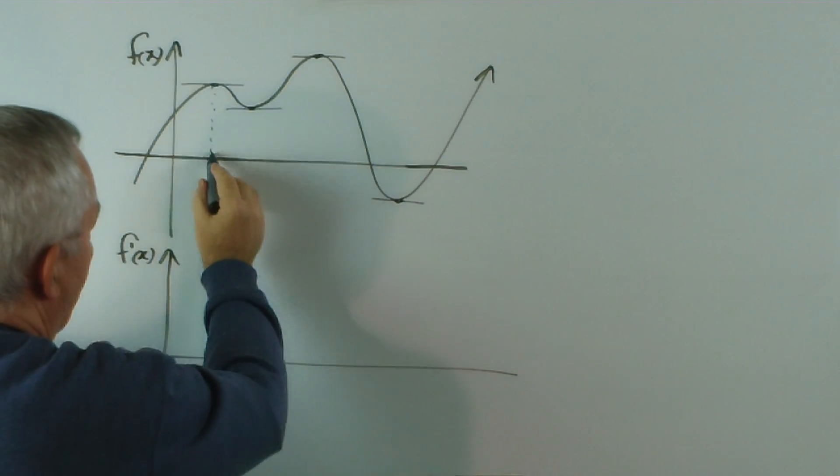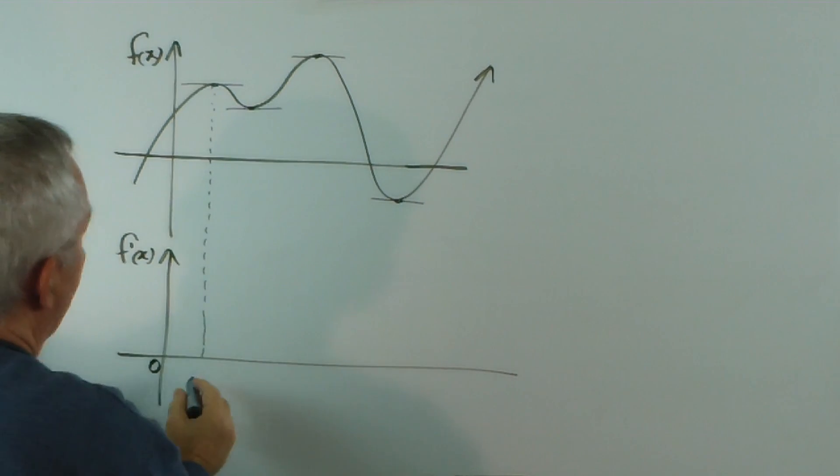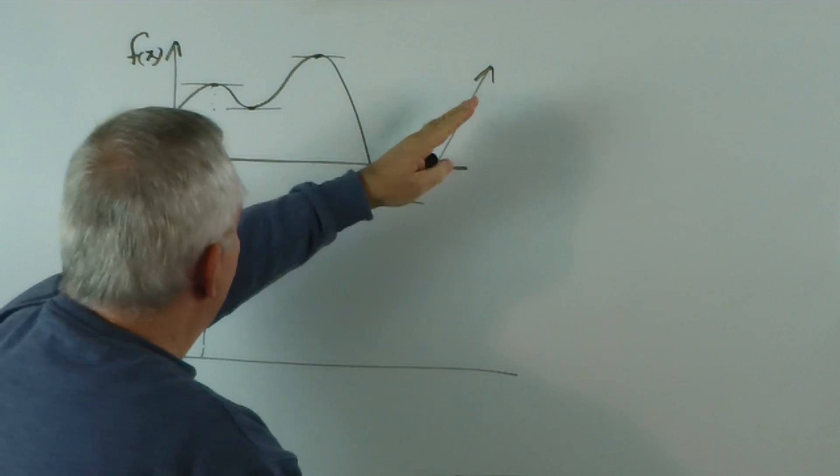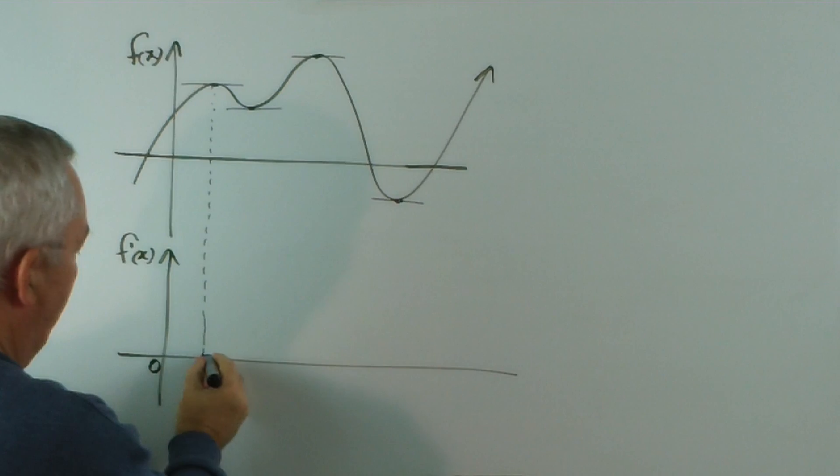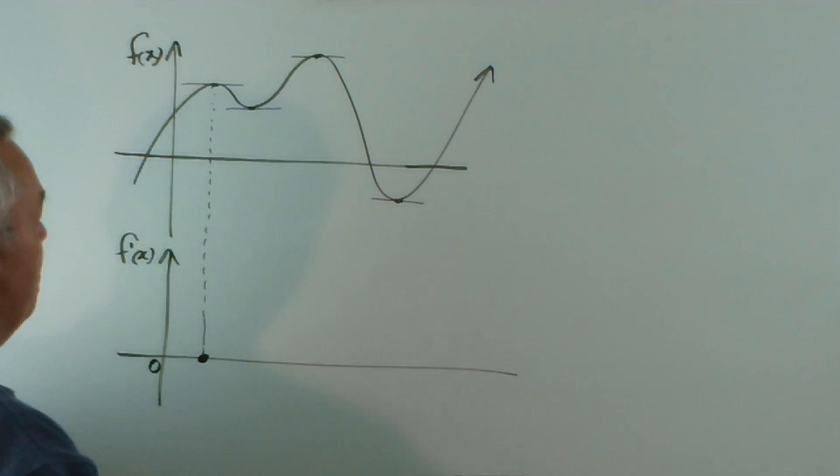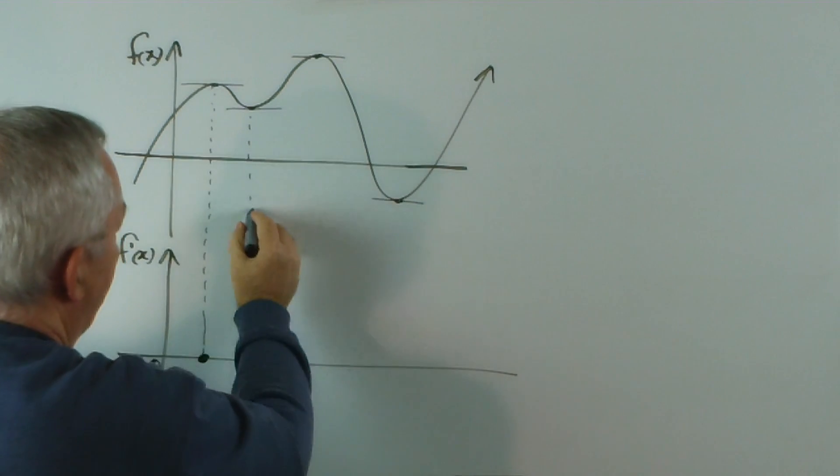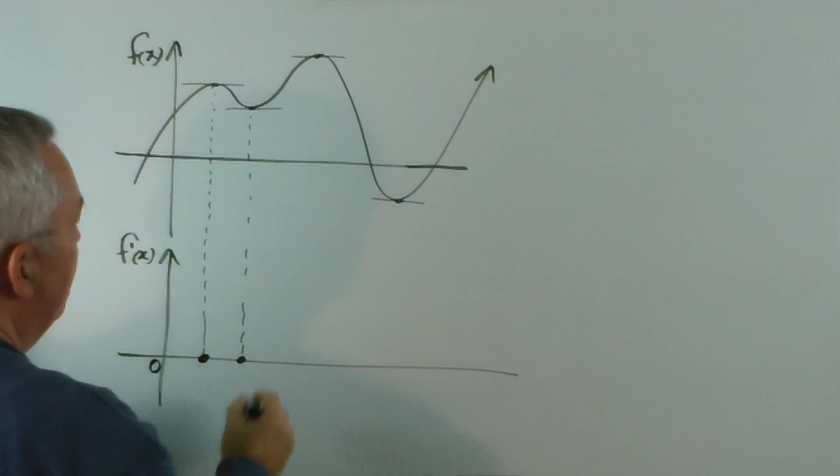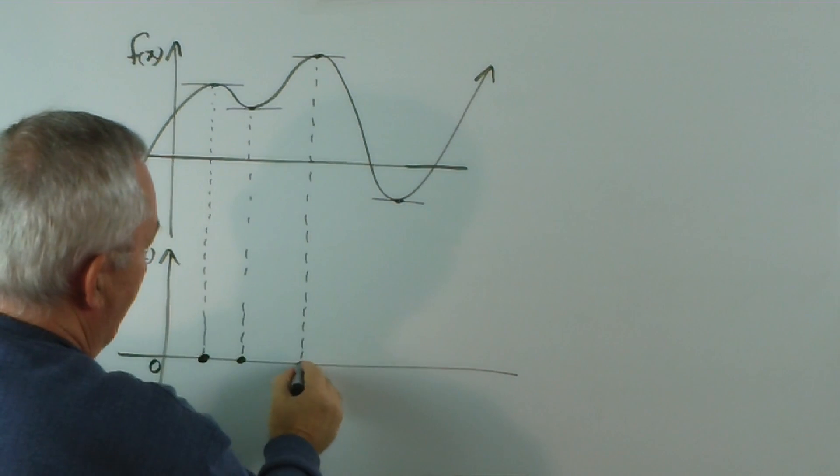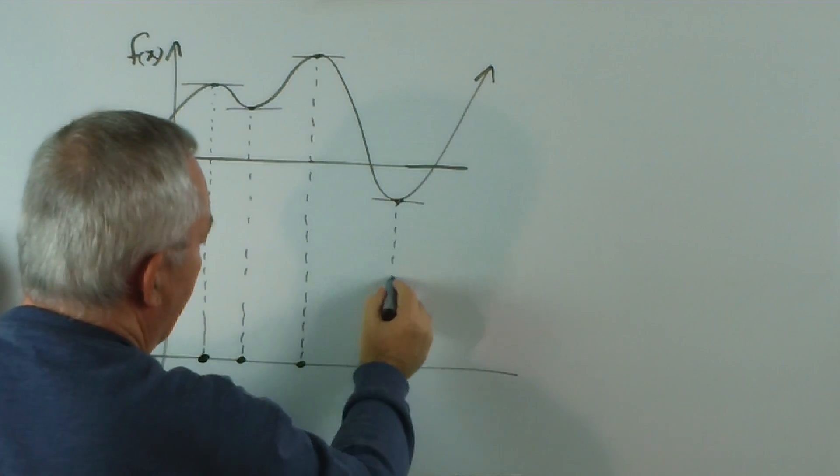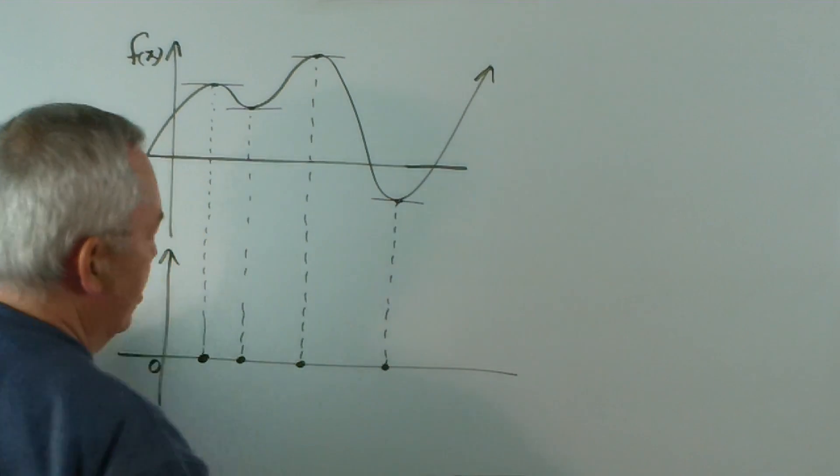I'll draw a dotted line down to line up the x values. So, on this graph, the function has a horizontal tangent, that is, the gradient is zero at that x value. So the gradient function is zero. Again, here, the gradient function is zero, the gradient function is zero, and the gradient function is zero.